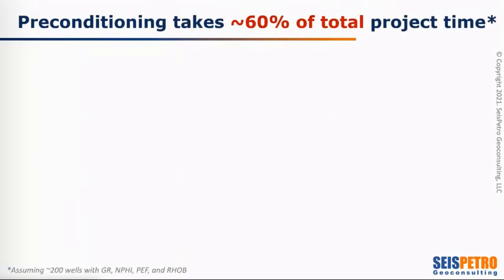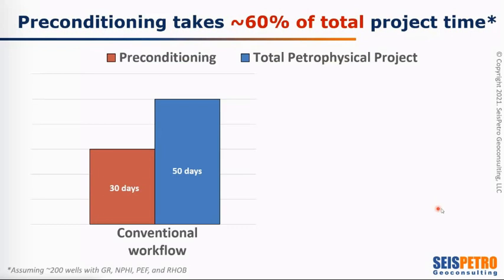Preconditioning takes approximately 60% of the total project time. In our experience, assuming approximately 200 wells with gamma ray, neutron, photoelectric factor, and resistivity, it takes around 50 days for a typical petrophysical project. And of that, at least one month — 30 days — is for doing the preconditioning. It's also called log normalization or standardization.